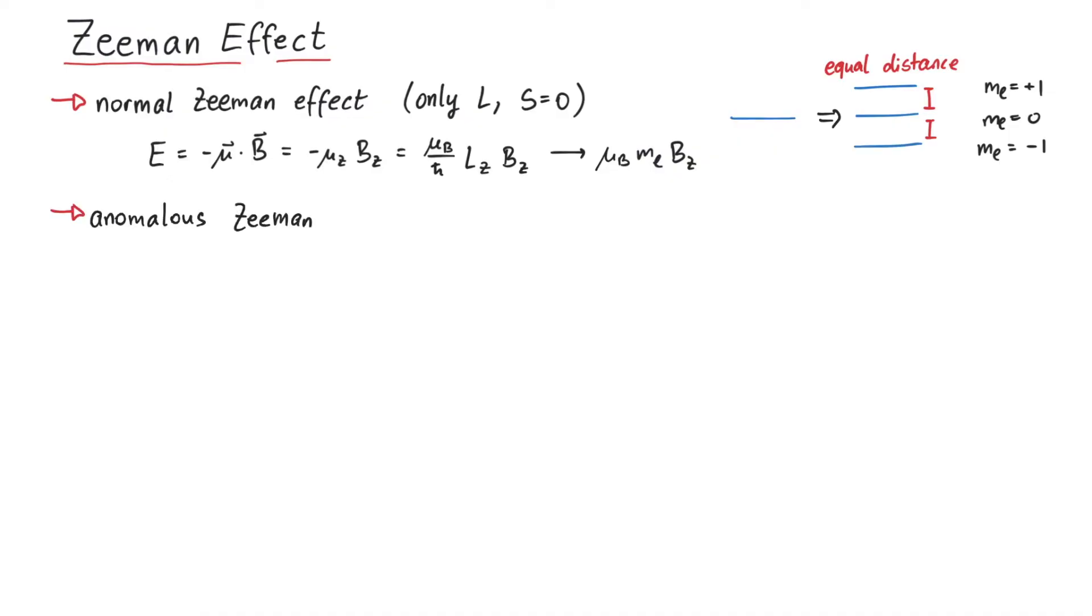Next, the anomalous Zeeman effect. Now we have orbital angular momentum, as well as spin, which together couple to a total spin j.